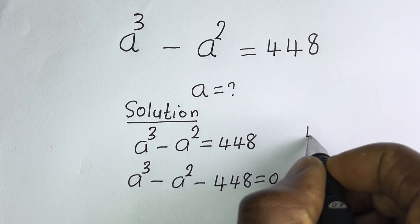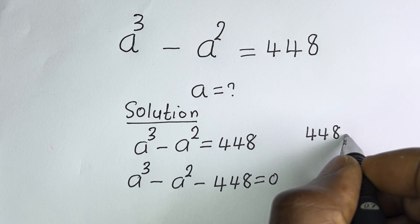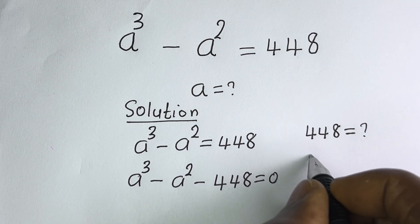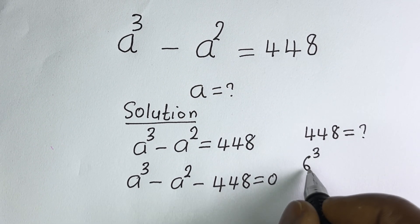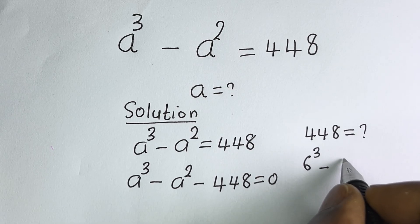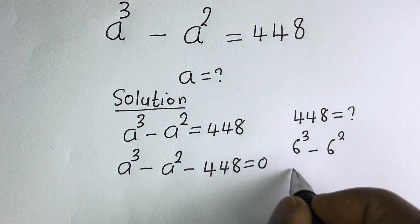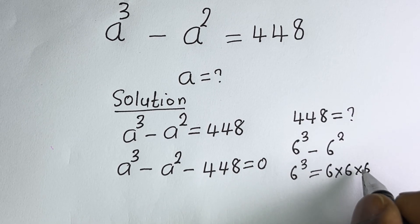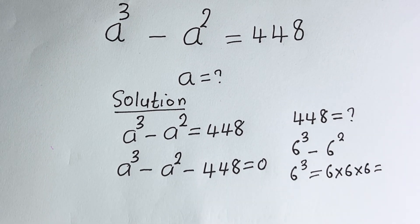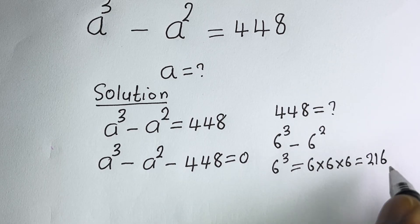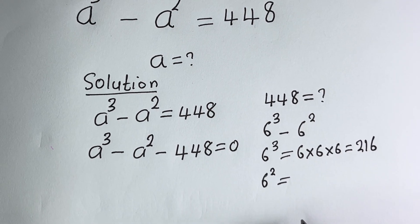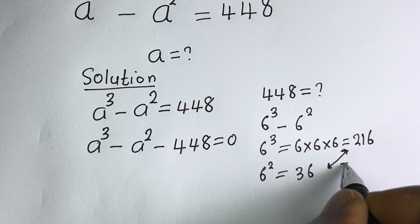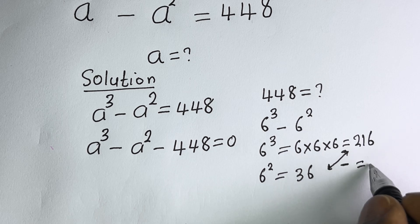Now, 448 needs to be split into a power of 3 and a power of 2. Let's consider C raised to power 3 minus C squared. C raised to power 3 is equal to 6 × 6 × 6, which is 216, and C squared is equal to 36. Subtracting gives 180.